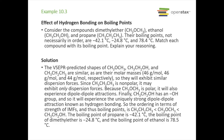The first one to look at is propane. Propane has no polarity at all — no polarity means no additional intermolecular forces beyond dispersion. So that means it's going to have the lowest boiling point of negative 42.1 degrees Celsius.